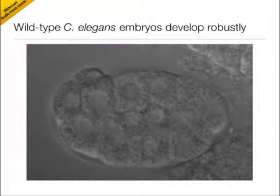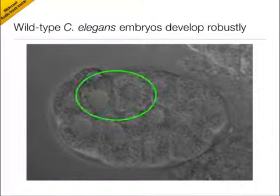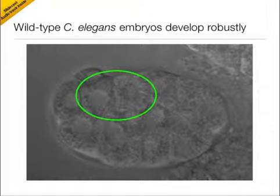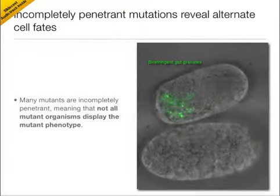The nematode C. elegans is in many ways the ideal system in which to study developmental robustness, because the fate of each cell upon cell division is almost completely specified for the lifetime of the organism. In our work, we study the cell fate determination of the two cells circled here, which, in wild-type worms, always develop into the worm intestine. In certain mutant worms, however, this invariant cell fate specification is disrupted, with even genetically identical mutant worms showing marked differences in cell fate within a population.